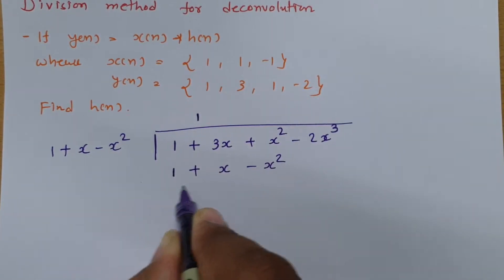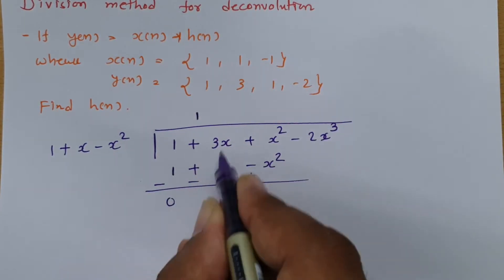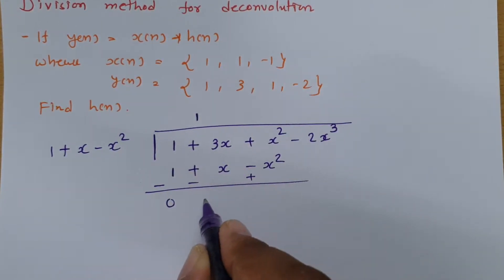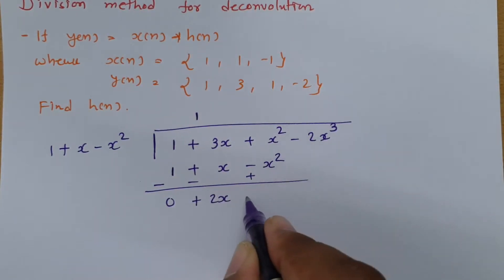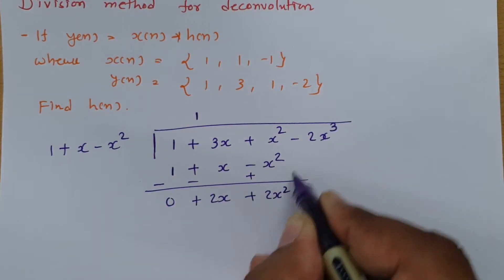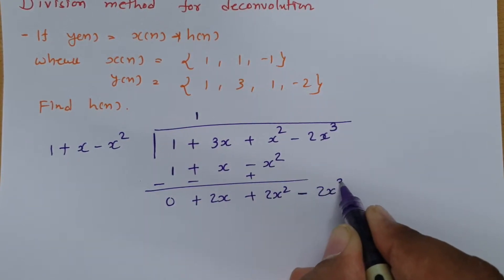If you subtract this (minus, minus, plus), this will be 0 + 2x + 2x² and then take this data over here: -2x³.